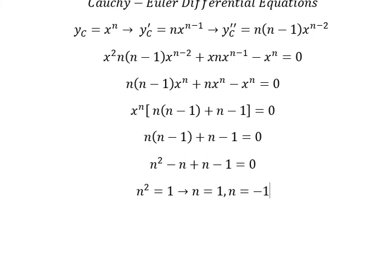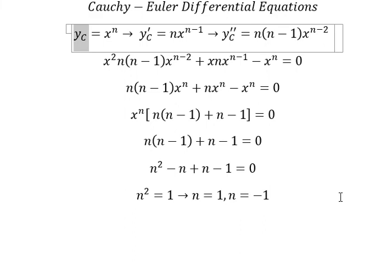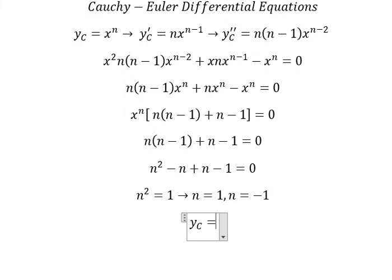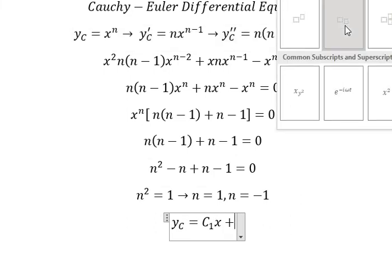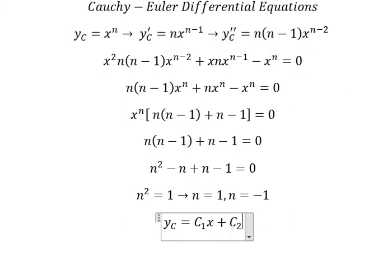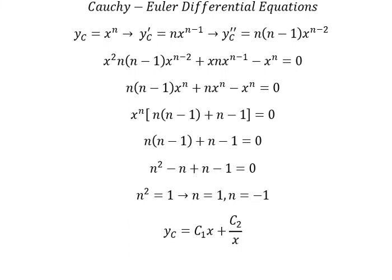After finding the two solutions for n, we can write the complementary solution yc. We have c1 times x to the power of 1, which we just write as x, plus c2 times x to the power of negative 1, which we write as 1 over x.